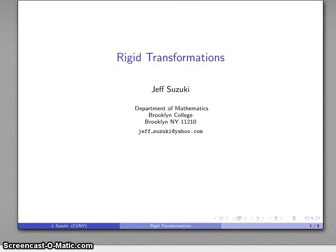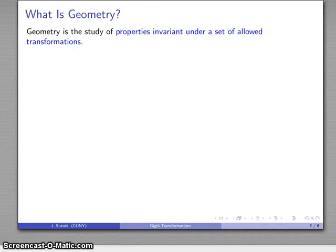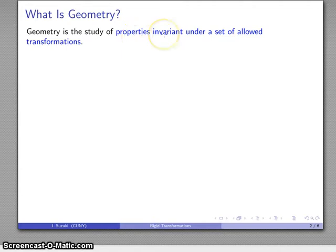One of the key concepts in geometry is the notion of a rigid transformation, and we can actually use this to define what geometry is. The idea is that geometry in general is the study of properties that are invariant — that don't change — under a predefined set of allowed transformations. So we have something, and this is something that will not change as long as we use a set of allowed transformations of our geometrical objects.